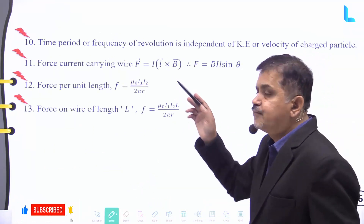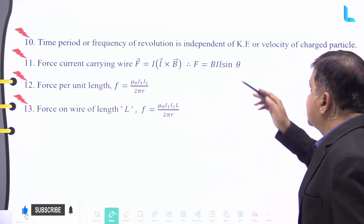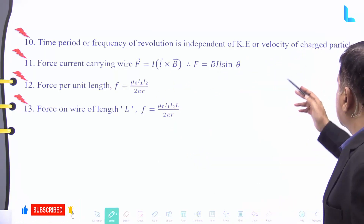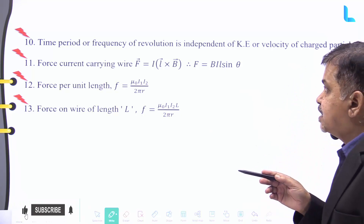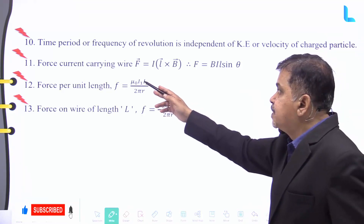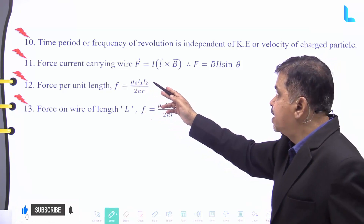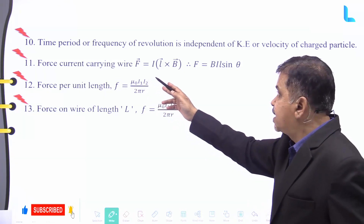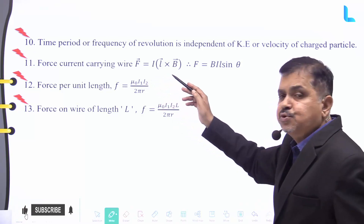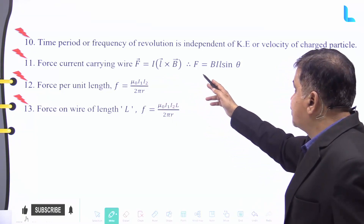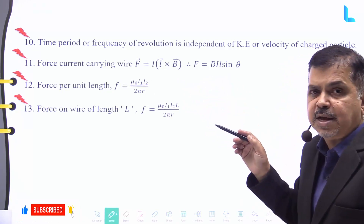The time period or frequency of revolution is independent of the kinetic energy or the velocity of the charged particle. The force on a current-carrying wire is given by vector F equals i times vector l cross vector B, therefore F equals BiL sine theta.